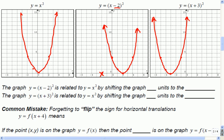So what can you tell me about the first one? X minus two is related to the regular graph by... Two units to the right. And X plus three is related to the regular graph... Three to the left. Three to the left. Excellent.